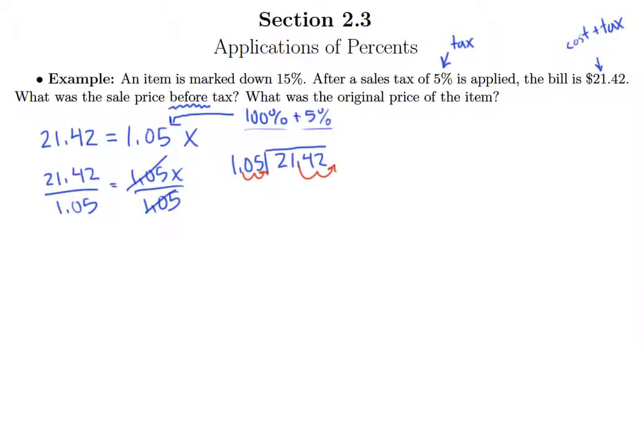So we end up doing the division problem, 2,142 divided by 105. Now 105 goes into 214 twice. 2 times 105 is 210. So I have a remainder of 4. Dropped 2. 105 does not go into 42. So put a zero there.